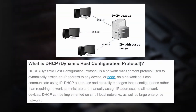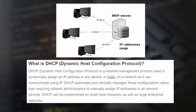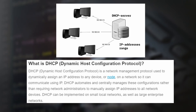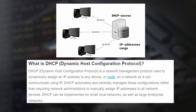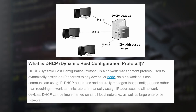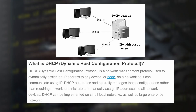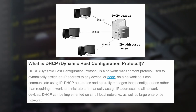DHCP, or Dynamic Host Configuration Protocol, is a network service that automatically assigns IP addresses to devices. Instead of manually configuring each device, DHCP ensures every device gets a unique IP address, along with other network settings like the subnet mask, gateway, and DNS server.